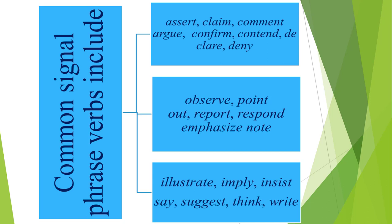Coherence refers to a certain characteristic or aspect of writing. Literally, the word means to stick together. Coherence in writing means that all the ideas in a paragraph flow smoothly from one sentence to the next sentence. With coherence, the reader has an easy time understanding the ideas that you wish to express. Consider the following paragraph as an example.